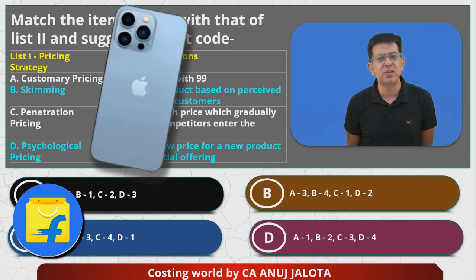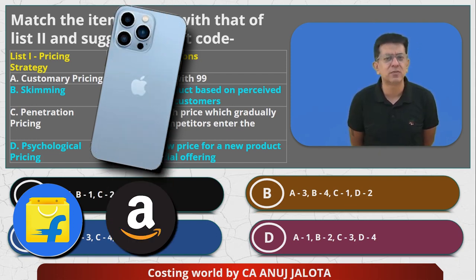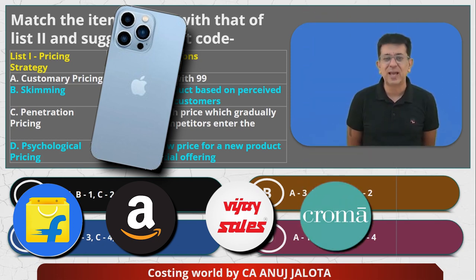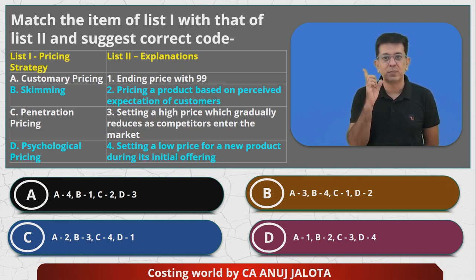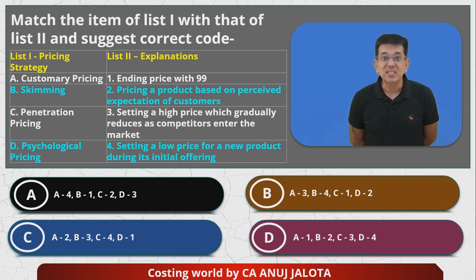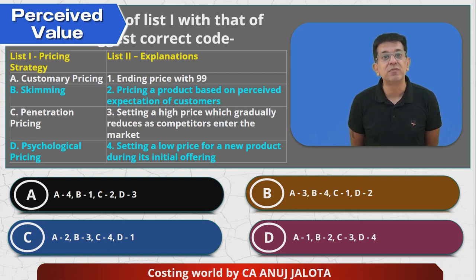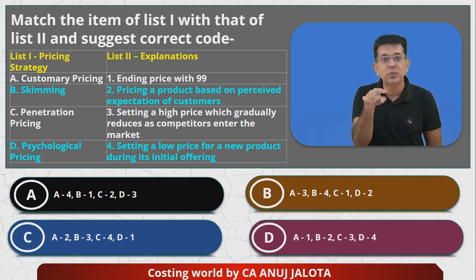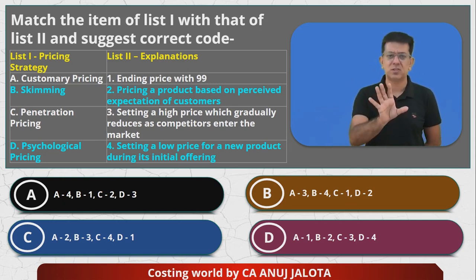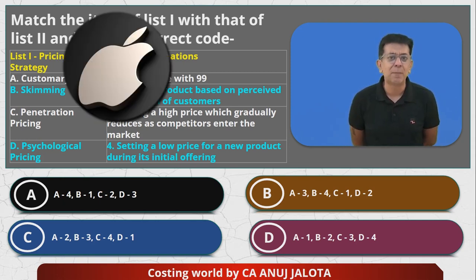Customary pricing means something like this: suppose a new iPhone was launched. You check it on Flipkart — it's available for ₹75,000. You check it on Amazon — ₹74,000. You check it on Vijay Sales, Croma, Reliance Digital — approximately every store shows ₹74,000 to ₹76,000, a few rupees here and there. So in your mind you start to develop a perception that the worth of this product is around ₹74,000 to ₹75,000. This is called perceived value.